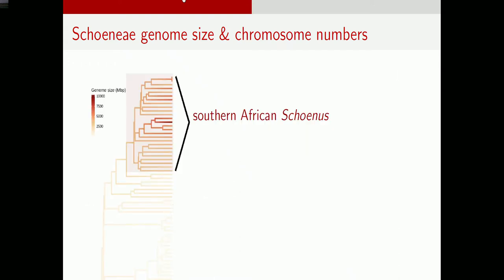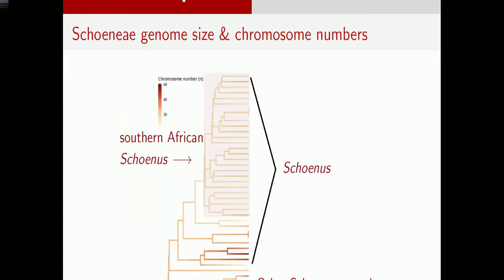If we put genome size on the phylogeny, the light colors symbolize small genome sizes across the Schoeninae, and once you get to the Southern African clade of Schoenus, there is an explosion of genome sizes. It's interesting to think about what might be causing this — possibly more polyploidy, or more repetitive sequence accumulation. Chromosome numbers, on the other hand, don't show that pattern — they're all over the place.